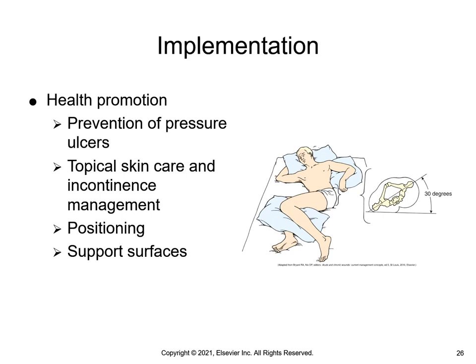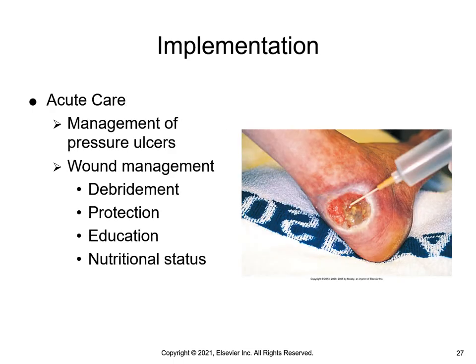Repositioning or turning patients is a consistent element of evidence-based pressure injury prevention. The treatment of patients with pressure injuries requires a holistic interprofessional approach. Before treating a pressure injury, reassess the wound for location, stage, size, tissue type, amount of exudate, and surrounding skin condition. To maintain a healthy wound environment, the nurse should prevent and manage infection, clean the wound, remove non-viable tissue, maintain the wound in a moist environment, eliminate dead space, control odor, minimize pain, and protect the wound and peri-wound skin.